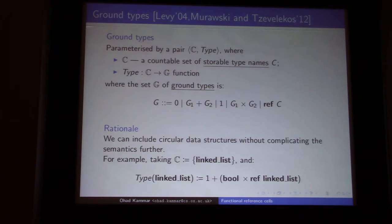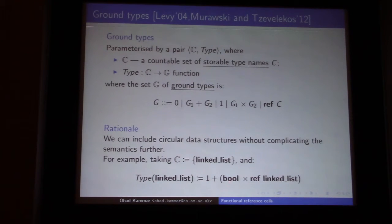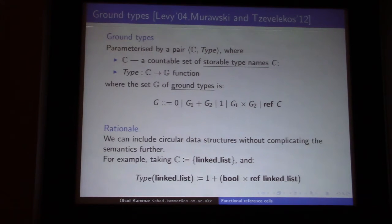For example, we can have a type name called linked list, and the type we associate to it: linked lists are either empty, or we have some bit and then a reference to another linked list. So that's a thing you already know. That's the first component — these ground types. Once you decide what the storable type names are and what types they denote, you can start off.